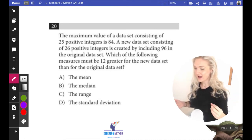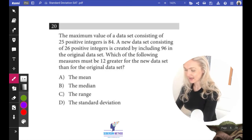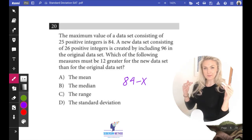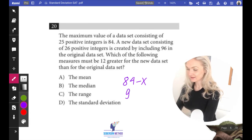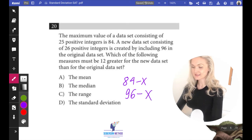Because if your range was calculated by 84 minus x, and x is the minimal value, now your range is being calculated by 96 minus x.